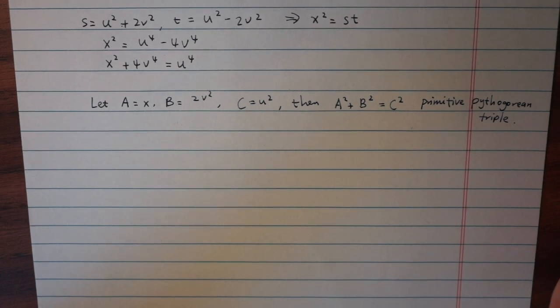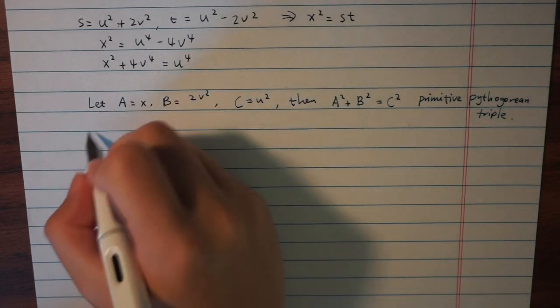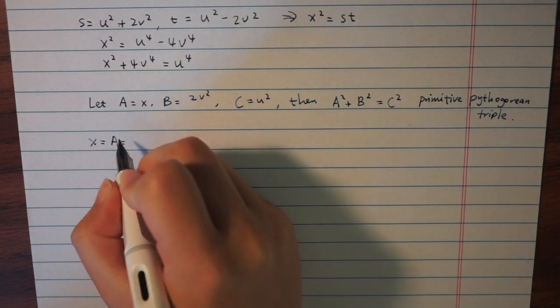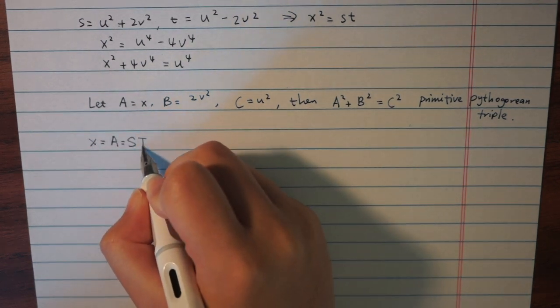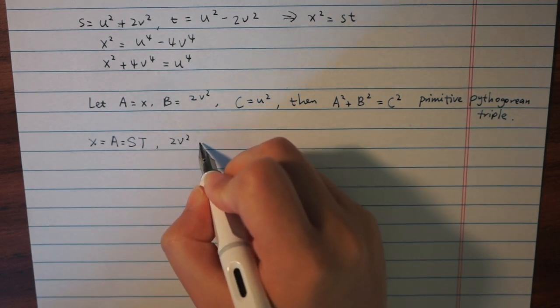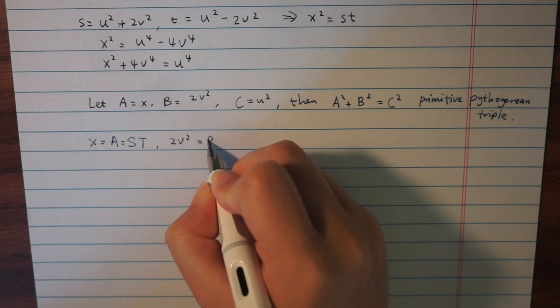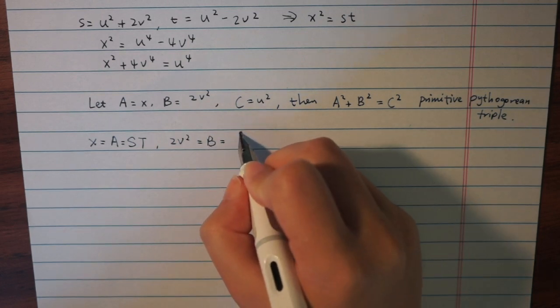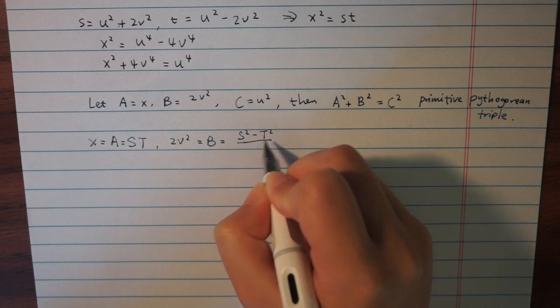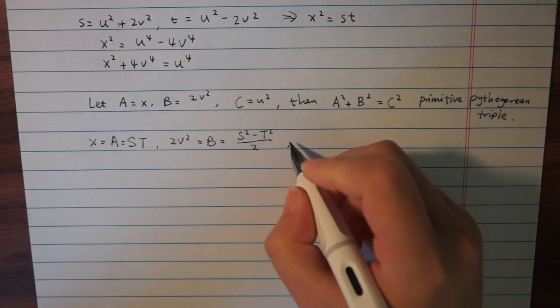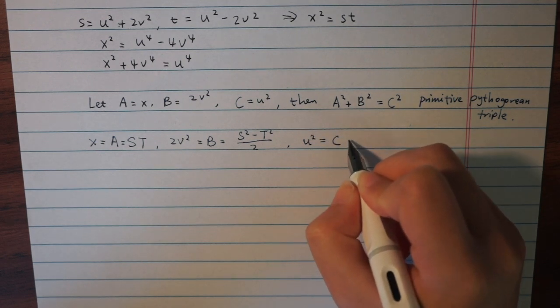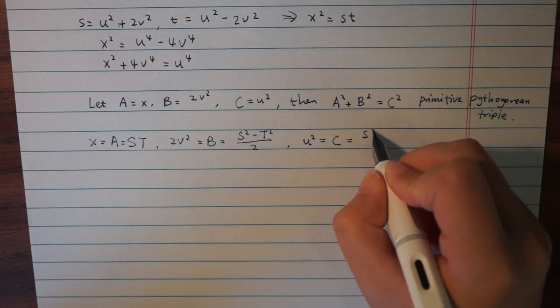Again, referring to chapter 2, we can find odd relatively prime numbers. Let's call them capitalized S and T, where B equals capitalized S squared minus capitalized T squared over 2. And finally, little u squared equals capitalized C, and that we set equal to capitalized S squared plus capitalized T squared over 2.